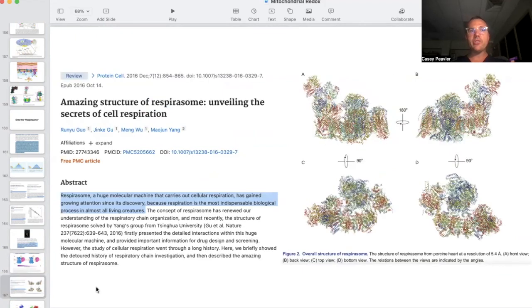So in 2016, the respirosome was solved by researchers. The respirosome, a huge molecular machine that carries out cellular respiration, has gained growing attention since its discovery because respiration is the most indispensable biological process in all living creatures. The concept of respirosome has renewed our understanding of the respiratory chain organization. And most recently, the structure of respirosome solved by Yang's group published in Nature in 2016, first presented the detailed interactions within this huge molecular machine.